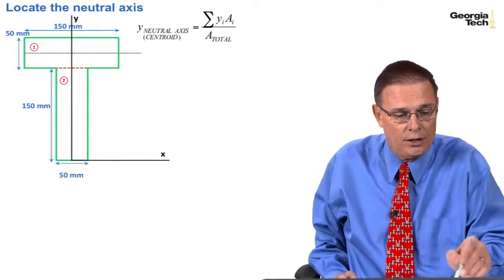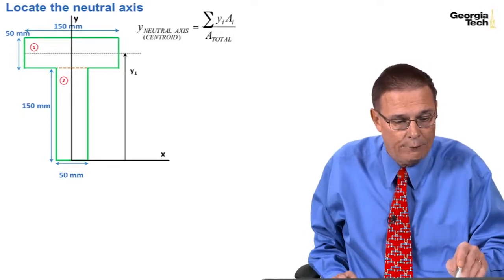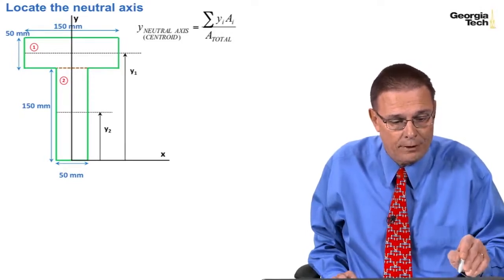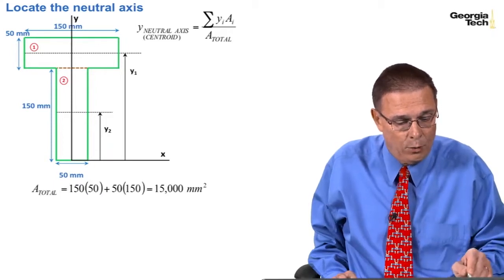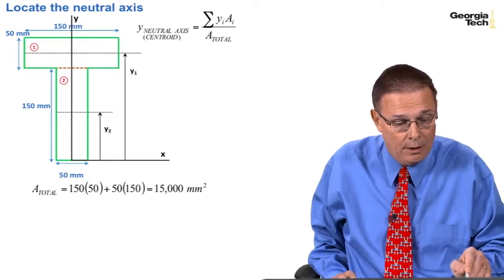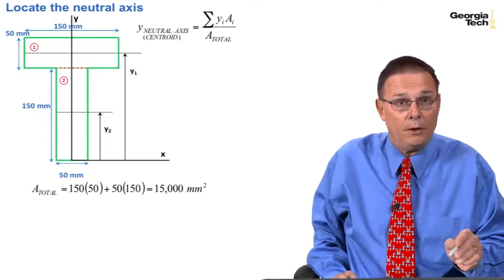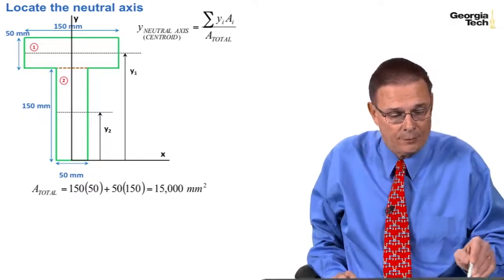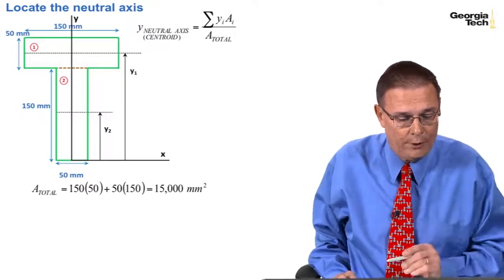And here is the neutral axis right in the center for this rectangle. So y1 is going to be 150 plus half of 50, and y2 will be 125. And so I've got 150 times 50 for the area of the top piece, and then 50 times 150 for the area of the bottom rectangle. So that's the total area.